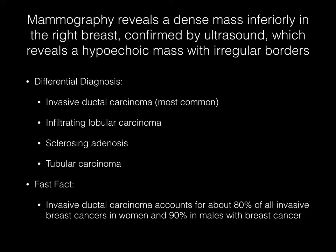Mammographic and ultrasound images are presented. Mammography reveals a dense mass inferiorly in the right breast. Ultrasound demonstrates a hypoechoic mass with irregular borders. Your differential diagnosis should include invasive ductal carcinoma, which is by far the most common. The differential diagnosis can also include infiltrating lobular carcinoma, sclerosing adenosis, and tubular carcinoma.